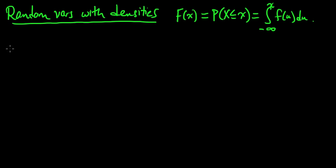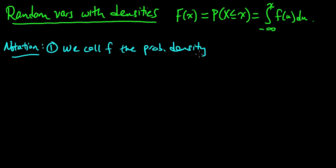And let's make some notational remarks here. We'll introduce, so we'll give a name to this thing. We've sort of referred to it as a density, but let's make that a little more precise. So first, we call this f, this little f, the probability density function, PDF, of the random variable x.